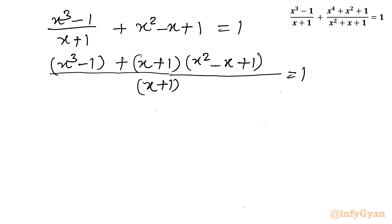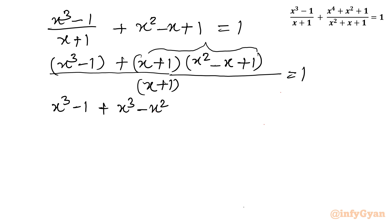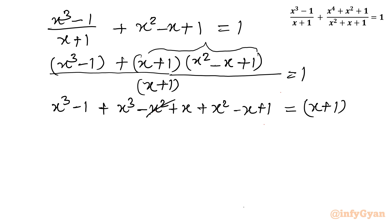Cross-multiplying and expanding the left-hand side: I write x³ - 1 as is, then multiply (x + 1) by (x² - x + 1), which gives x³ - x² + x + x² - x + 1. The right-hand side becomes x + 1. Now canceling like terms — x² with -x², and x with -x — we simplify the expression.